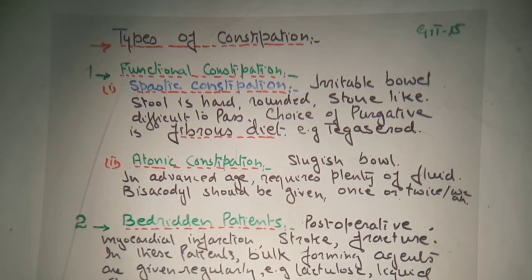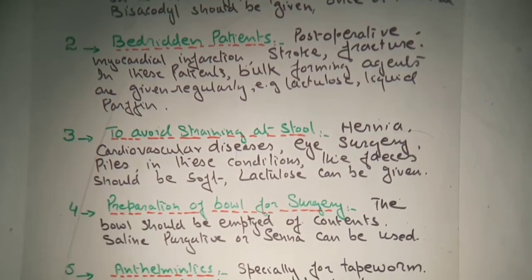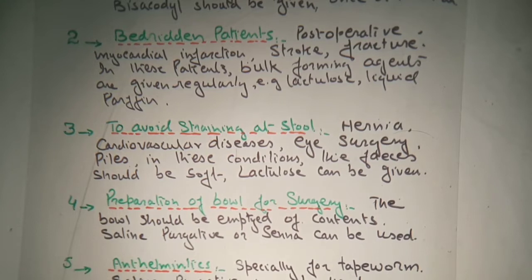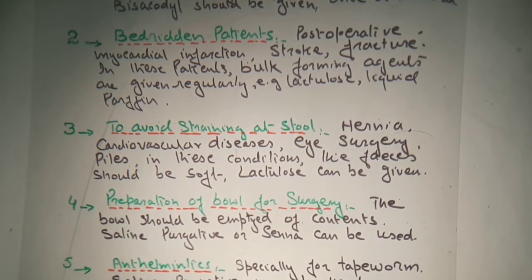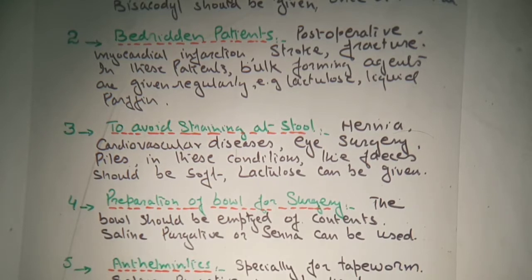Second type of constipation is bed-ridden constipation. When the patient is bed-ridden, because when there is decreased movement the entire system becomes slow. So movement must be there — body movement must be there. In the case of a bed-ridden patient, those who cannot walk and are confined to bed — such as post-operative patients, myocardial infarction, stroke, fracture — bulk-forming agents are used to overcome constipation.